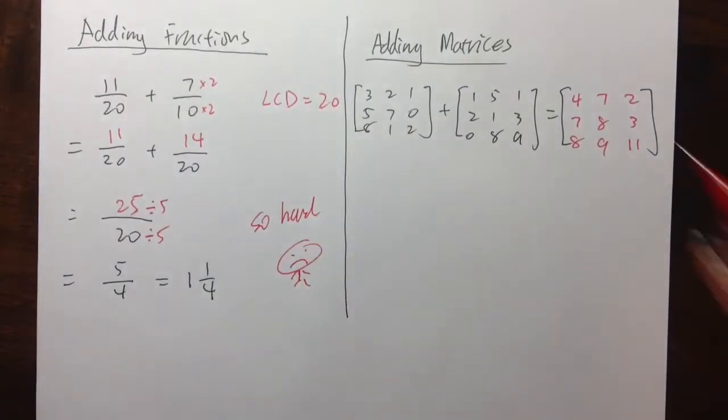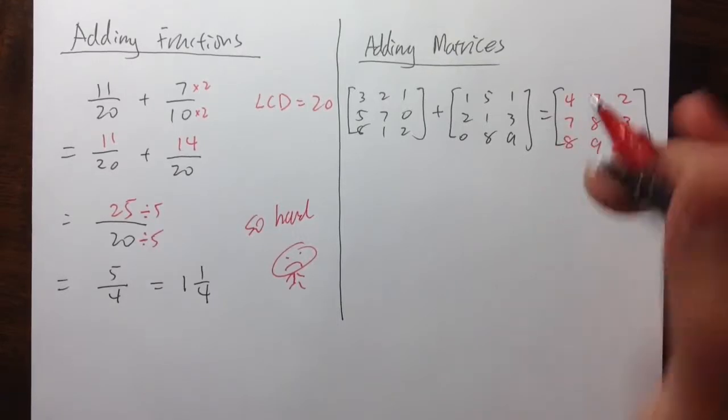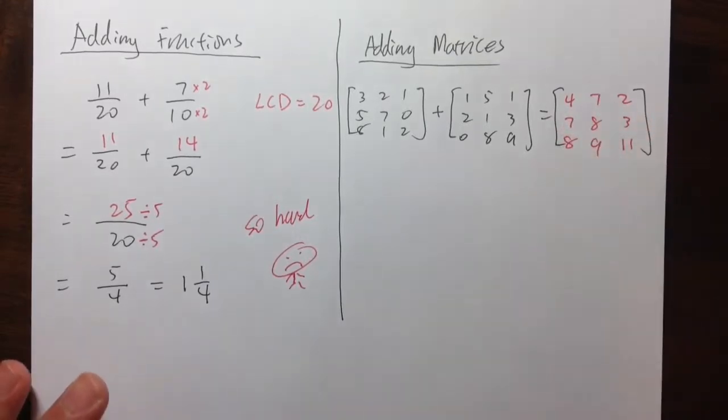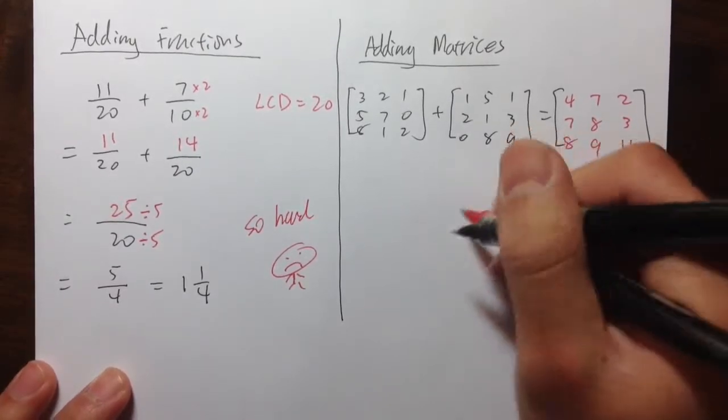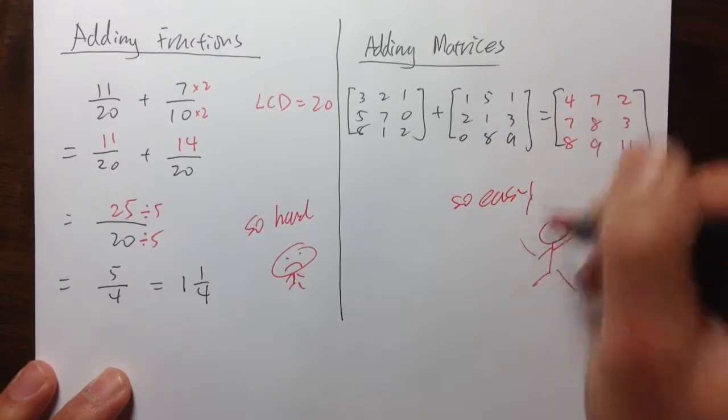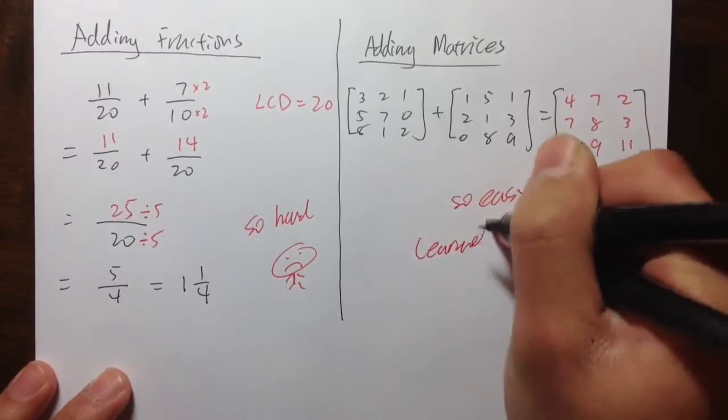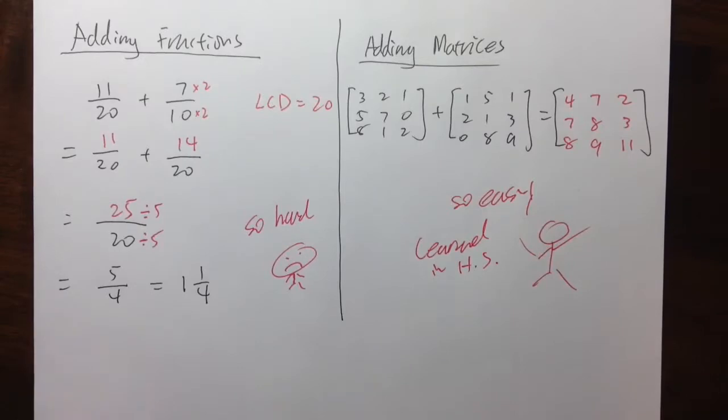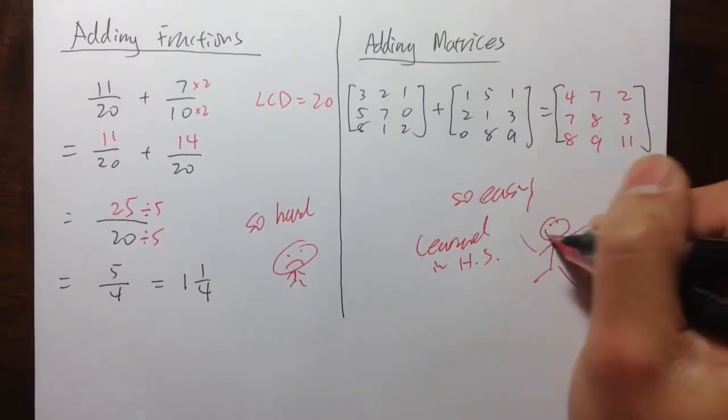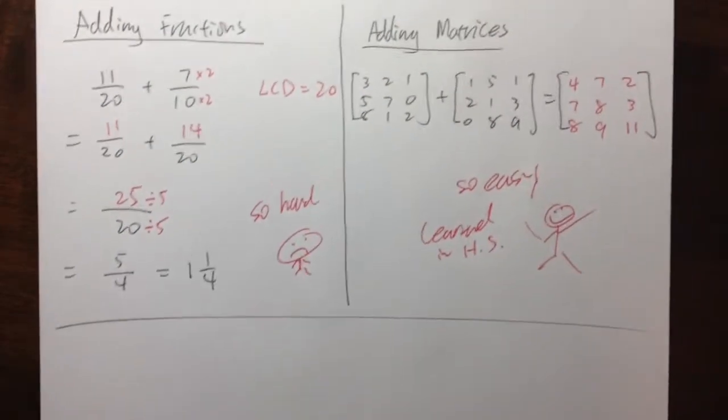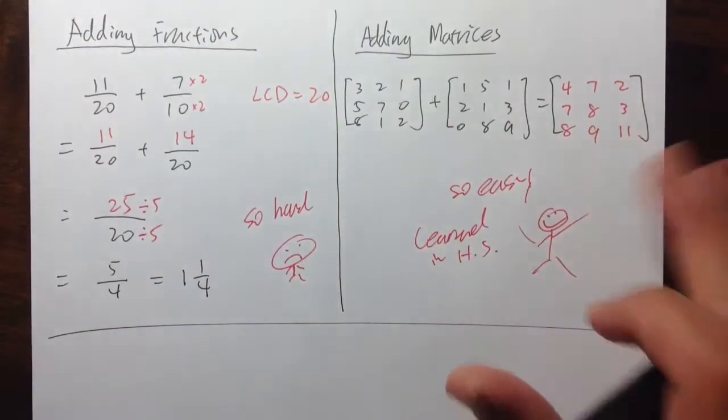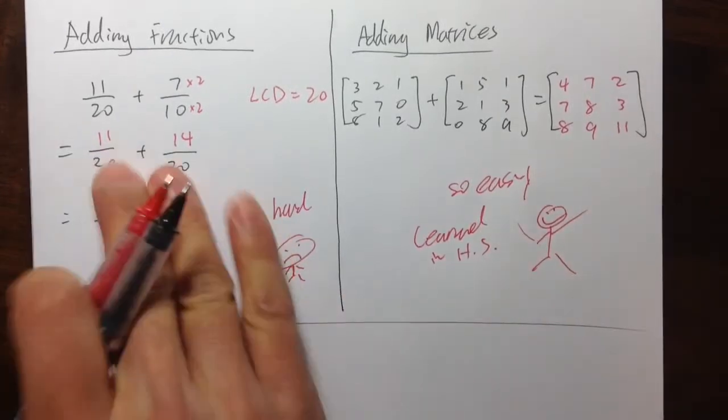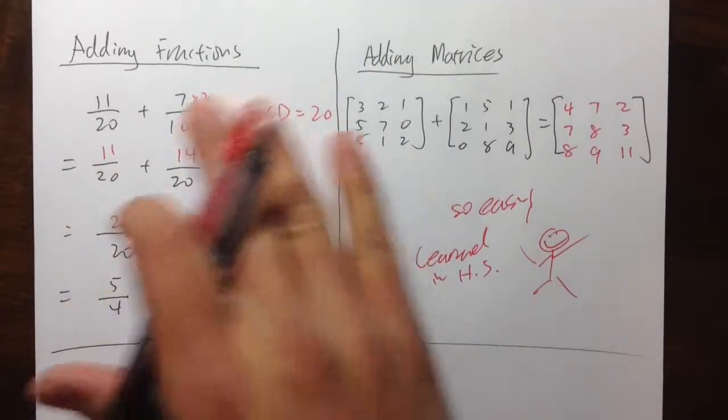Right? However, you learned about matrices when you are in high school or college. And this is so easy. Right? This is so easy. Learned it in high school. And sometimes maybe you learned it in college. It's so easy. This gives me a question though. As you can see that matrices look so complicated, but the operation is actually so easy. And fractions look so easy, but the procedure is so complicated. I have a question for you.